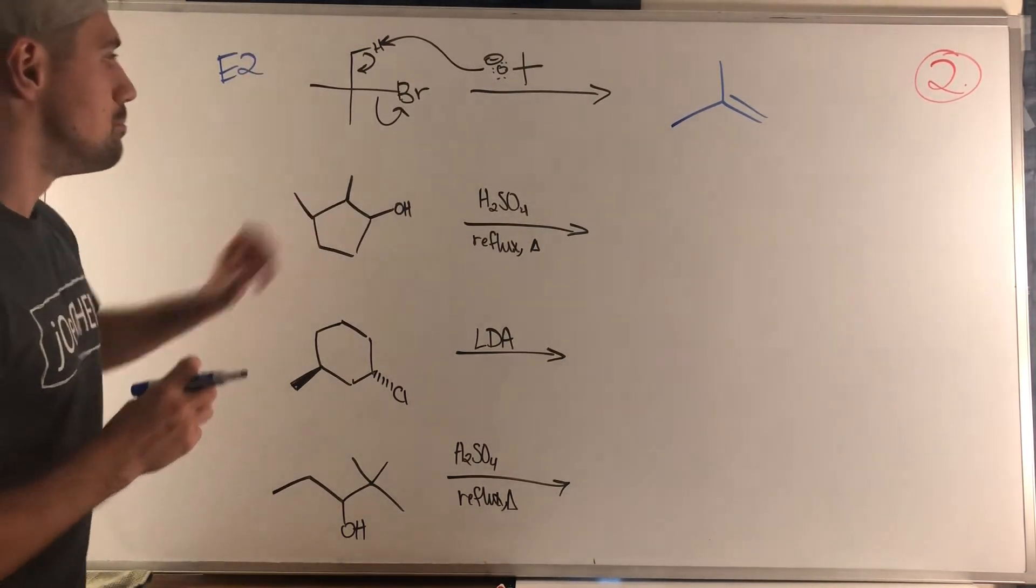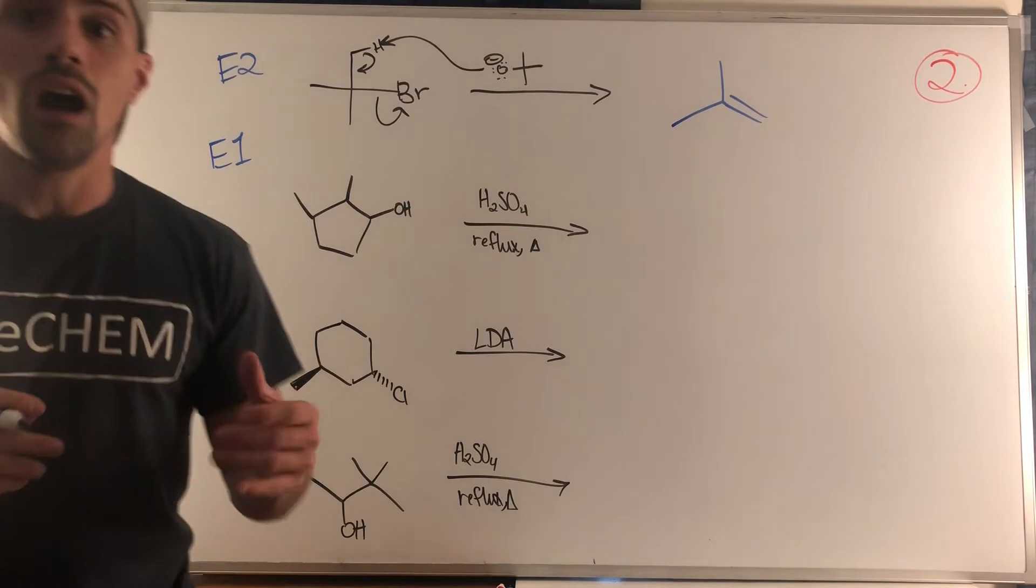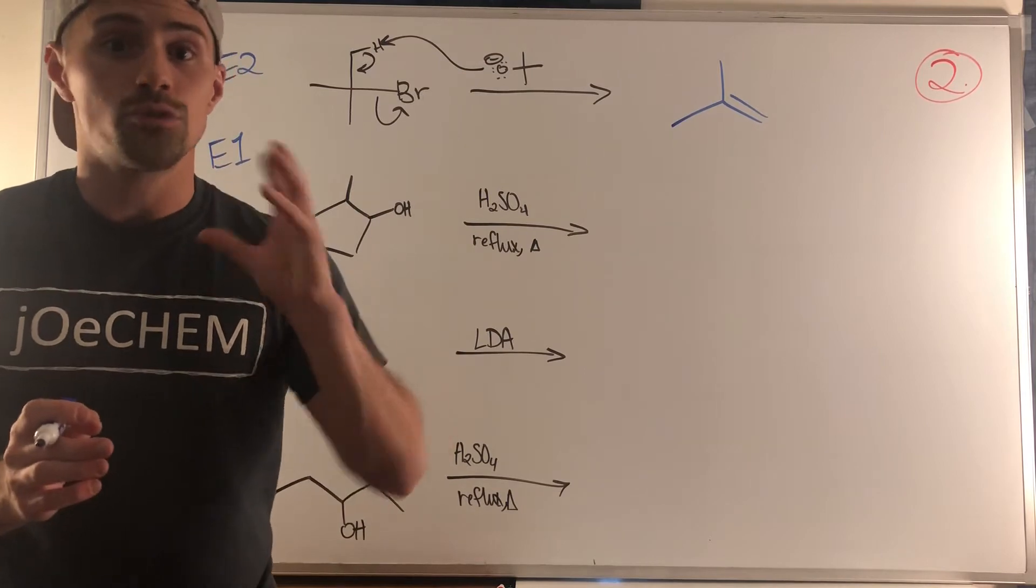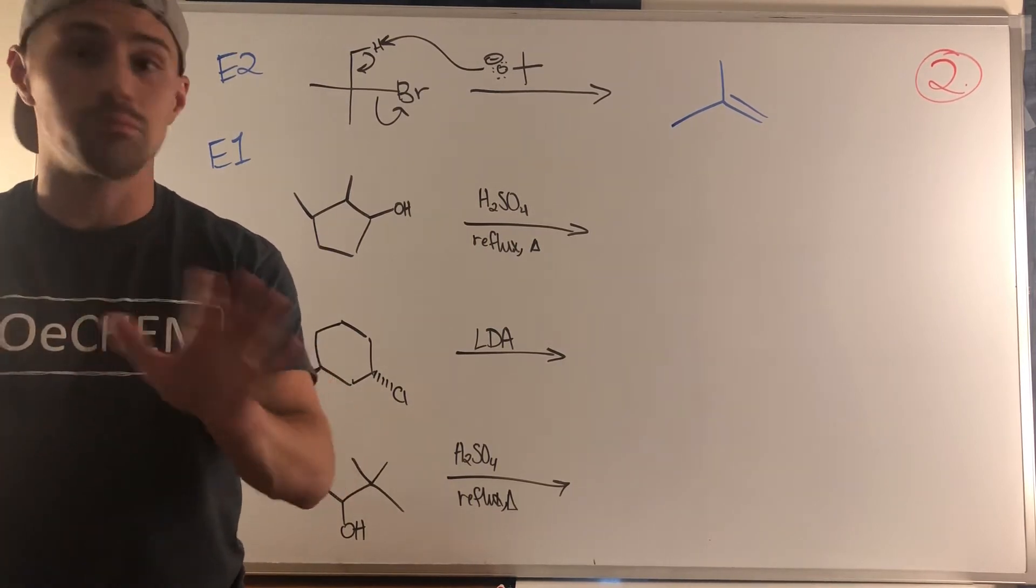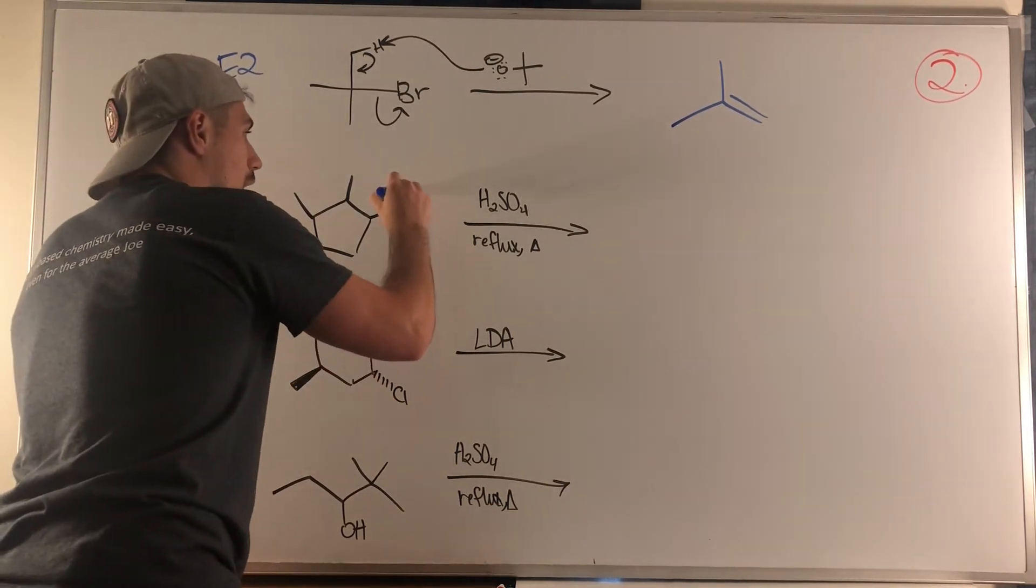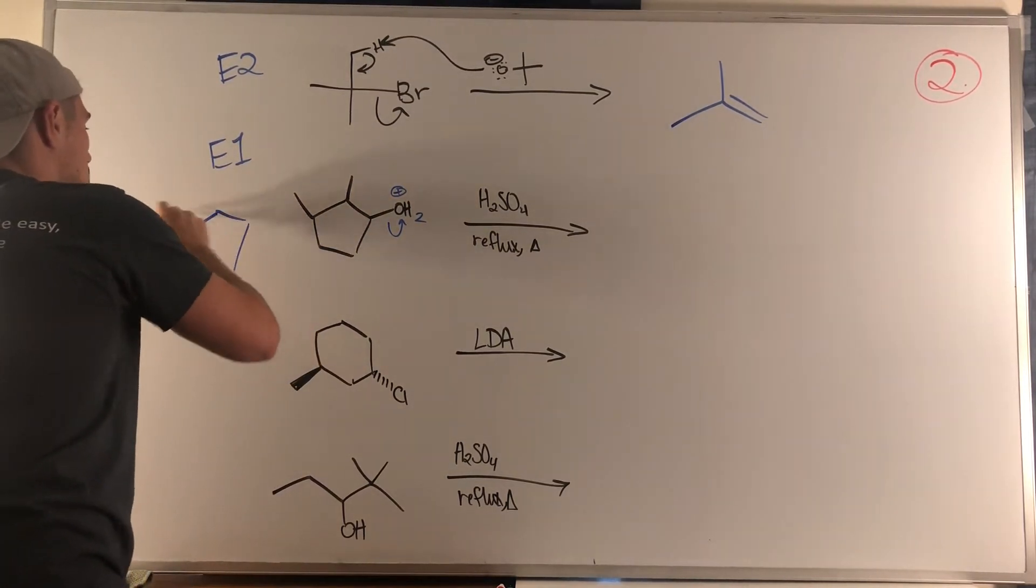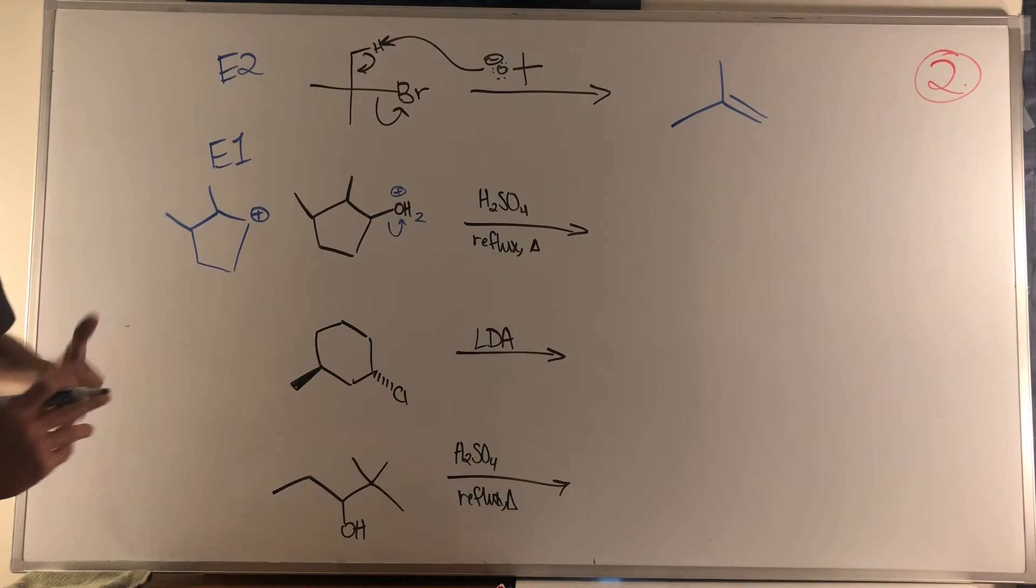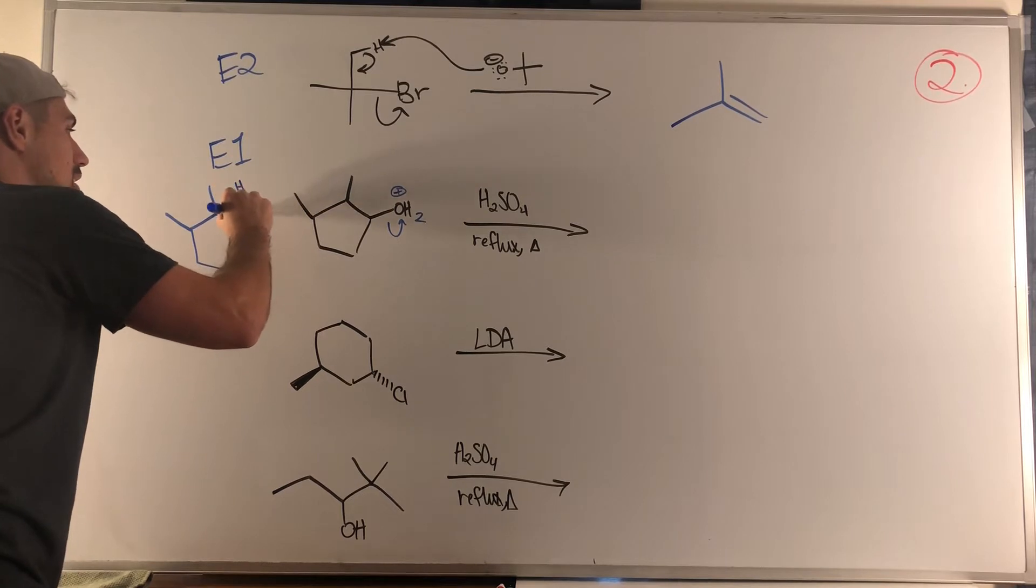Moving down here, this is going to be a dehydration reaction. This is an E1 mechanism, so we need to be wary of methyl and hydride shifts. My advice to you: anytime you have a mechanism that involves a carbocation, draw that in the margin of your paper. You want to see what that initial carbocation looks like, and then you can evaluate will this shift? That's the biggest piece of advice I can give you for these types of problems.